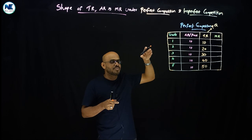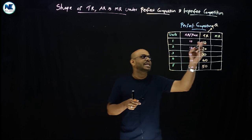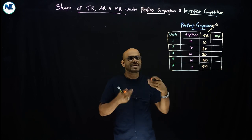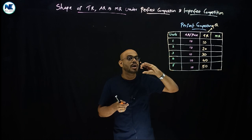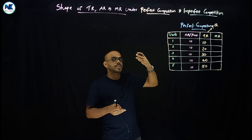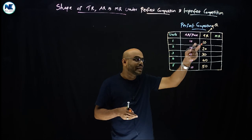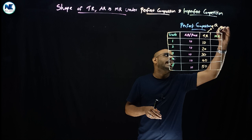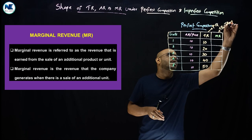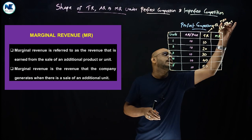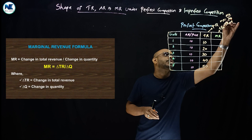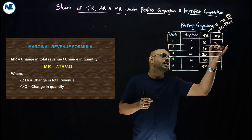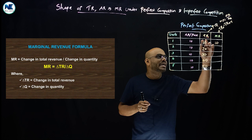Total revenue increases at a constant rate — 10, 20, 30 — with a uniform constant increase. So total revenue is an upward sloping straight line. Marginal revenue equals TR(n) minus TR(n-1), or MR equals change in TR divided by change in Q. MR is also the slope of total revenue. Here MR equals 20 minus 10, which gives 10.